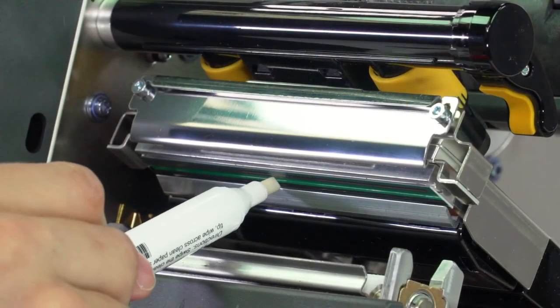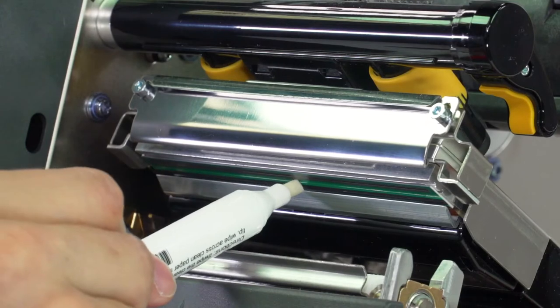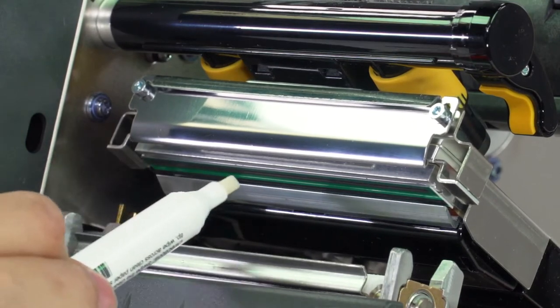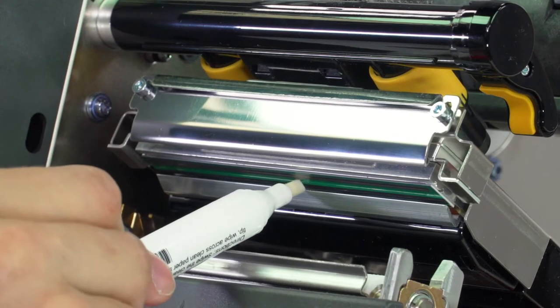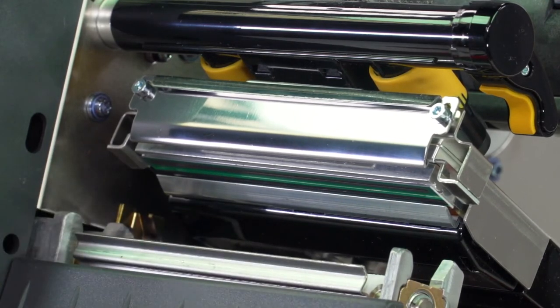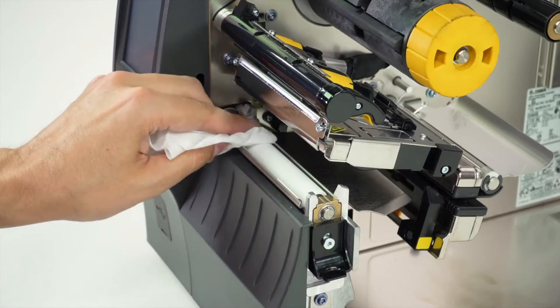Use a Zebra Preventive Maintenance Cleaning Swab or Pen to wipe along the brown strip on the printhead. Or you can use a lint-free cloth moistened with a solution of 9 parts isopropyl alcohol and 1 part deionized water.